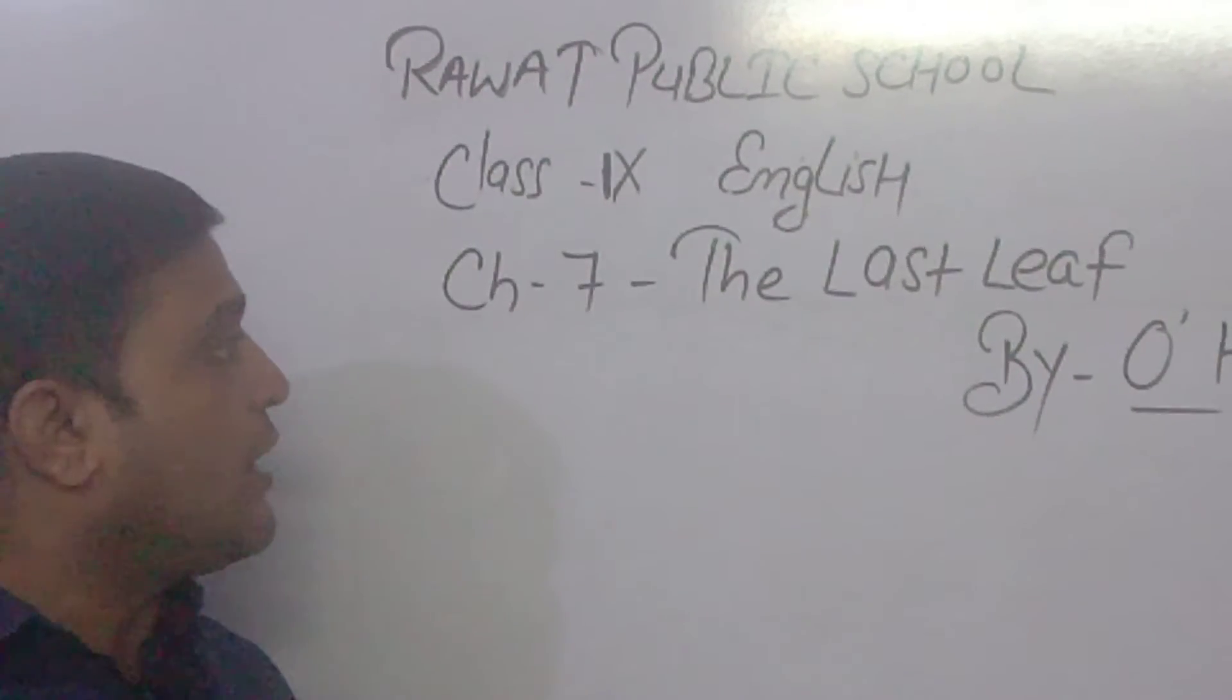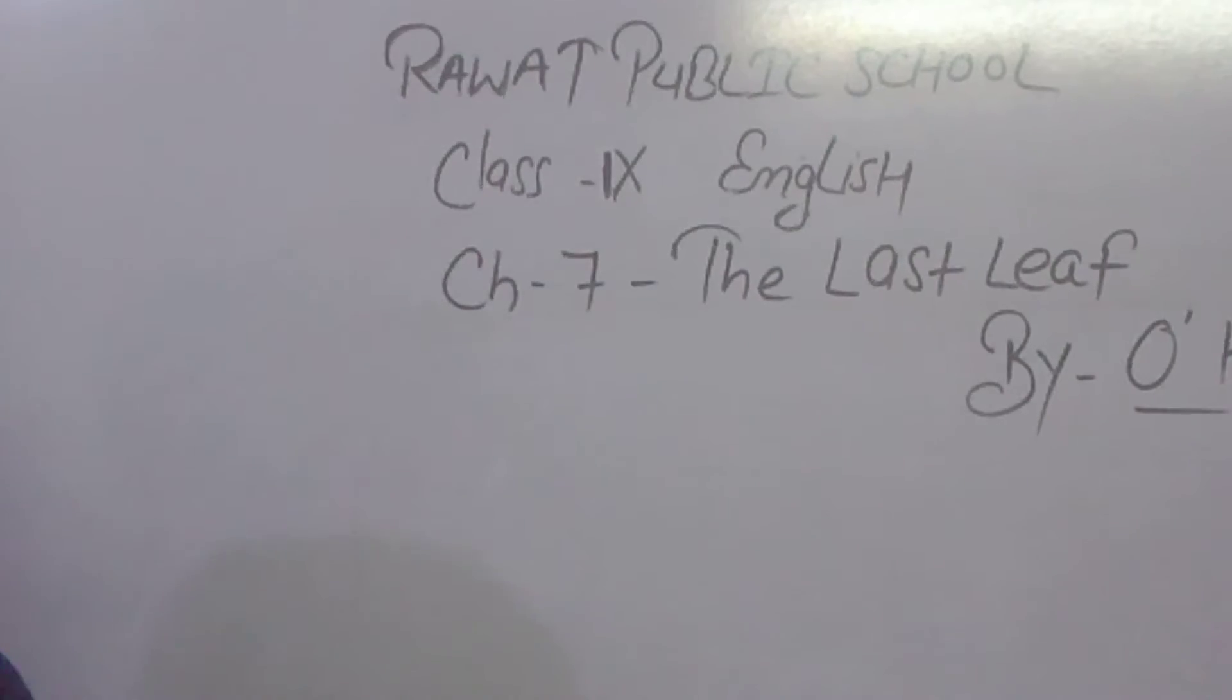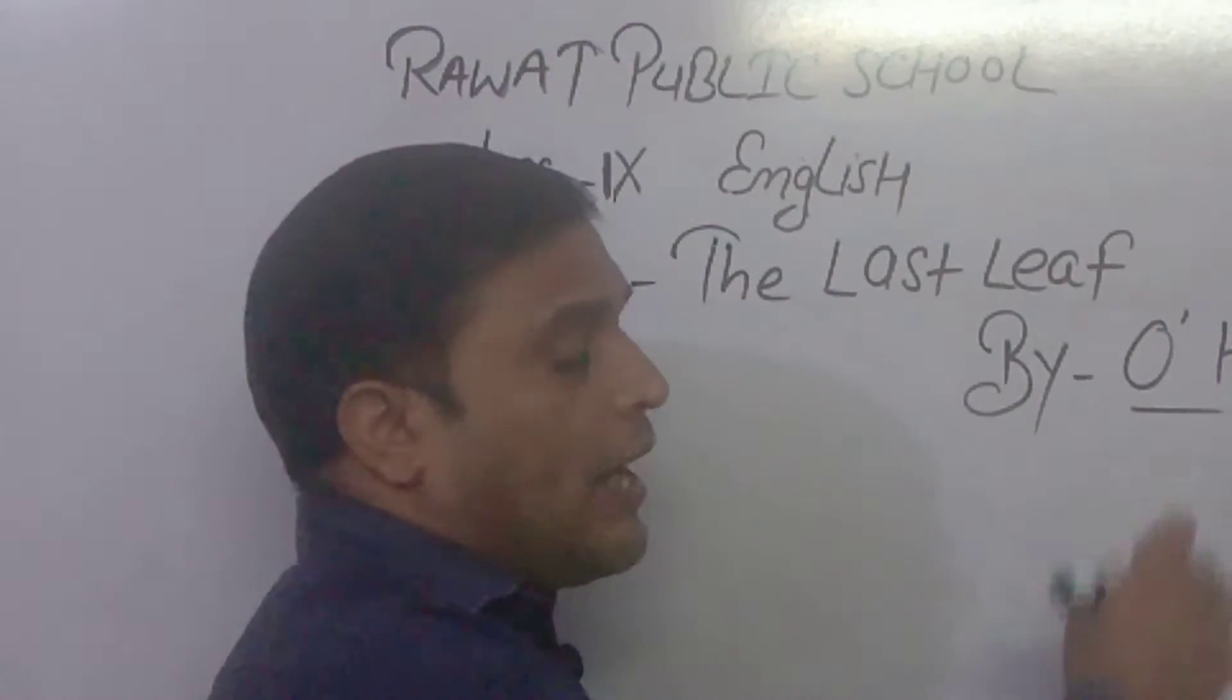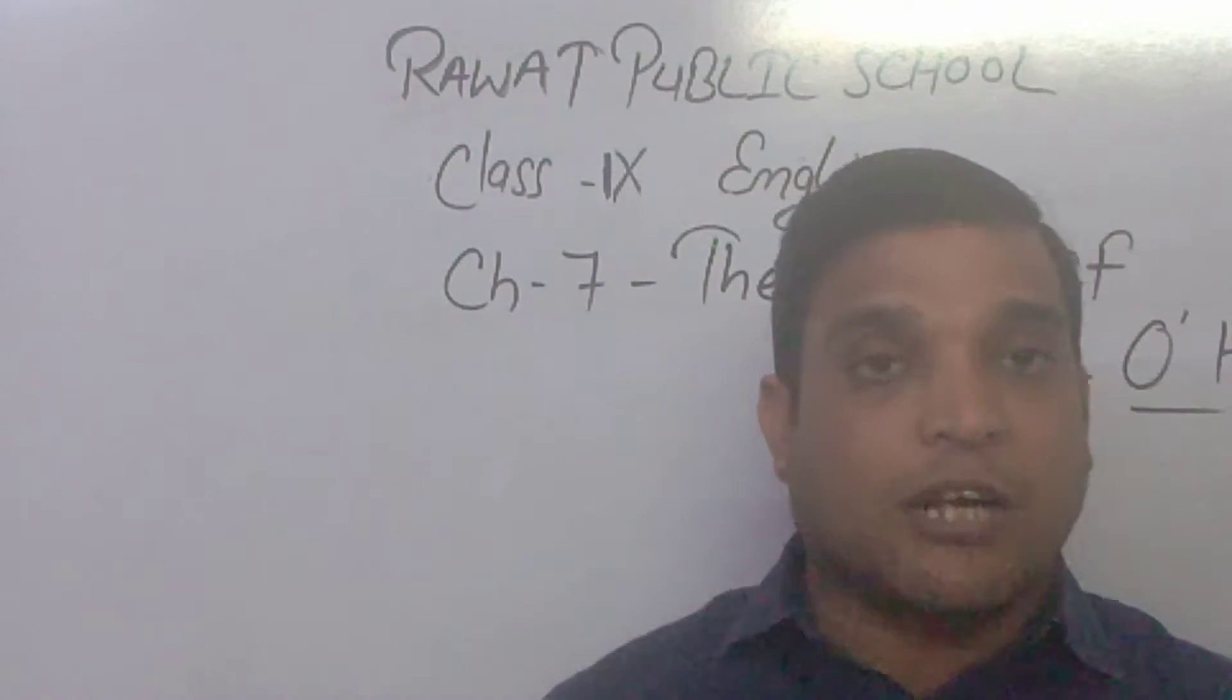Good morning students. Today we will start chapter number 7, The Last Leaf by the writer O. Henry. Let's start with the introduction part of this chapter.